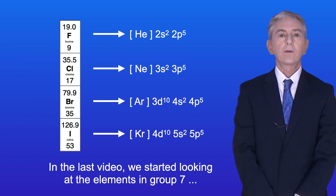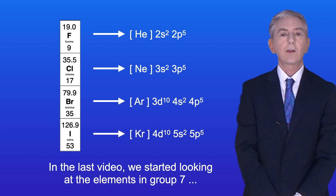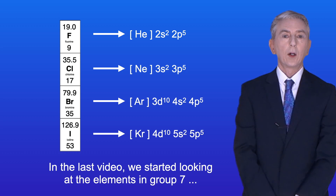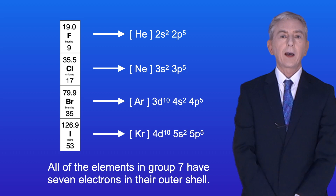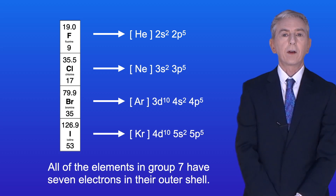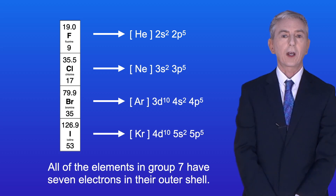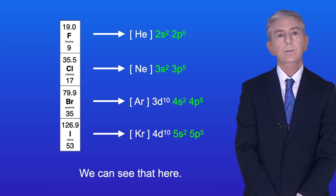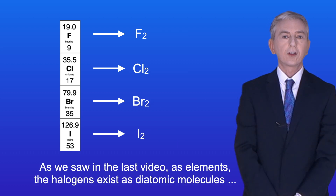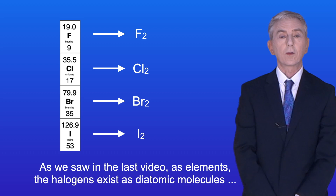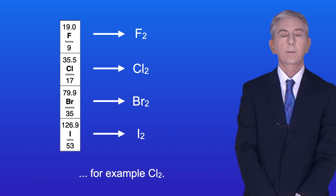In the last video we started looking at the elements in Group 7, which are also called the halogens. All of the elements in Group 7 have 7 electrons in their outer shell, and we can see that here. As we saw in the last video, as elements the halogens exist as diatomic molecules, for example Cl2.